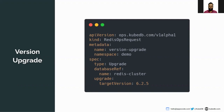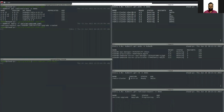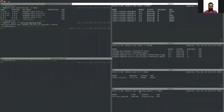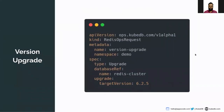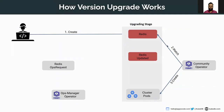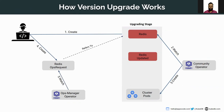When this ops request is progressing, let's have a look at how things happen under the hood. First I used a community operator and a YAML to create the Redis cluster, and this Redis object is watched by the community operator. Then I created a Redis ops request, and this ops request object is watched by the ops manager operator. In the ops request YAML I have provided a database name which this ops request will operate on.